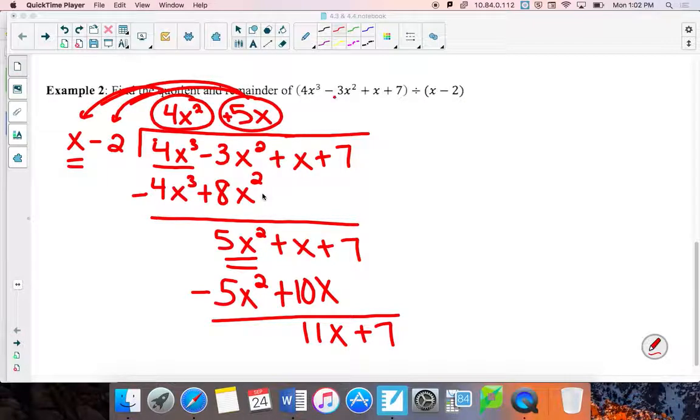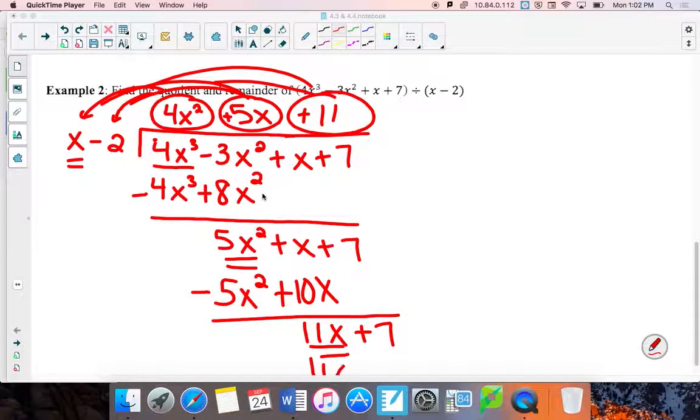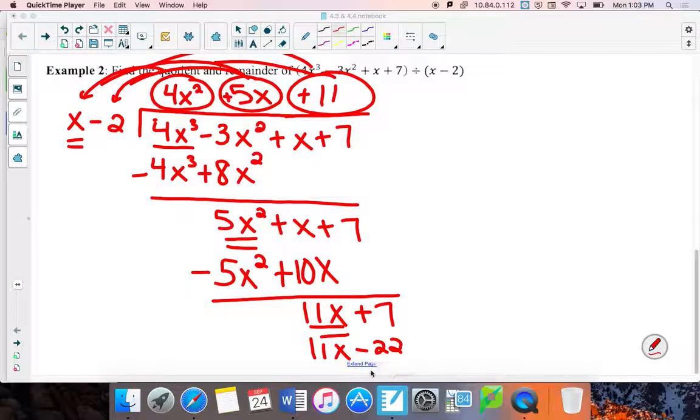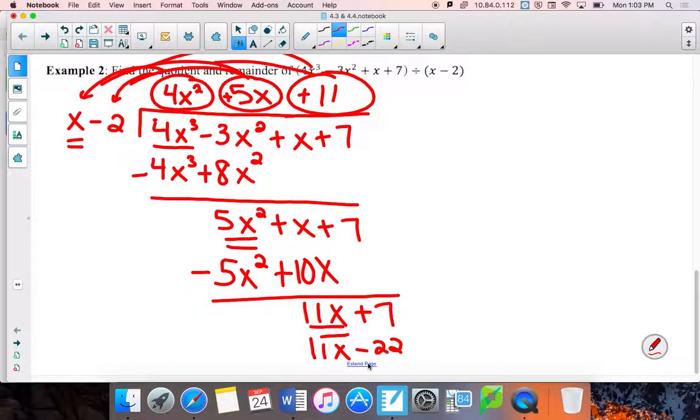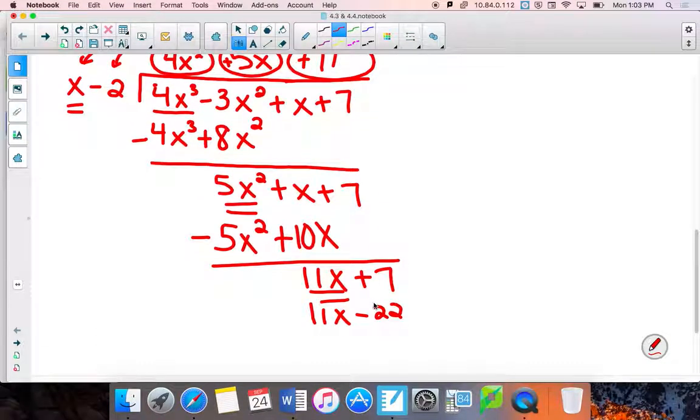Repeat your process. x on the outside times something has to give me this 11x. That's going to be a positive 11. Multiply him to both values. I'm going to get 11x minus 22. Draw your line, change the sign. Give myself just a little more room here. There we go. Draw the line, change the signs to everything. It's going to give me 0x and 29.